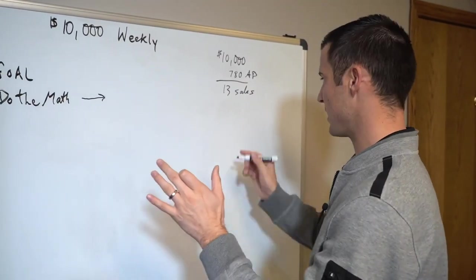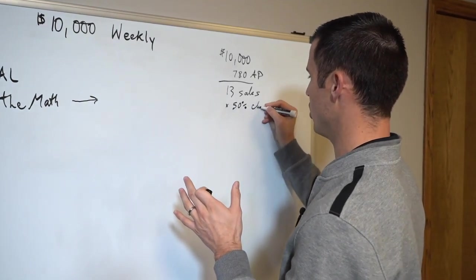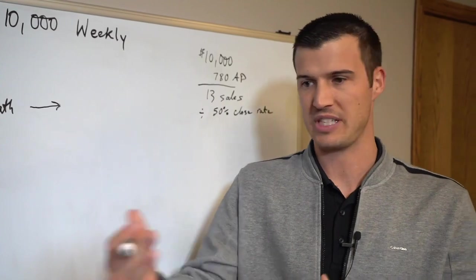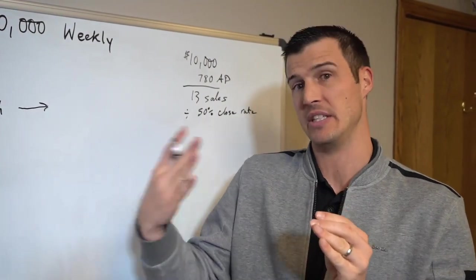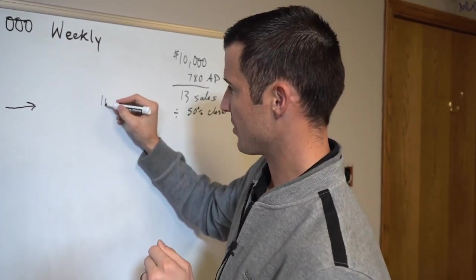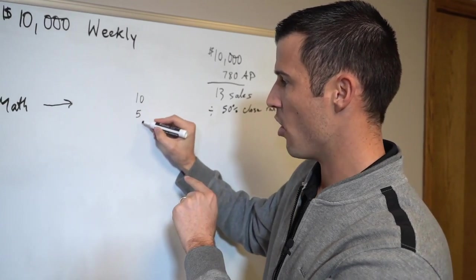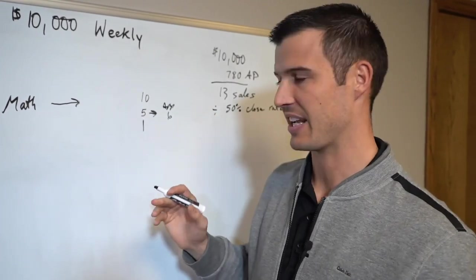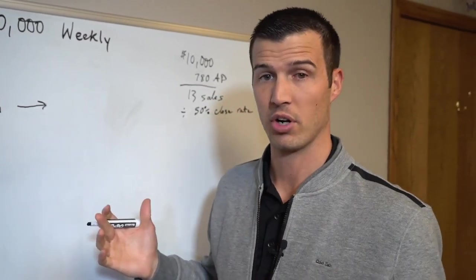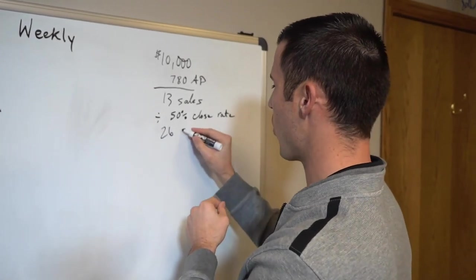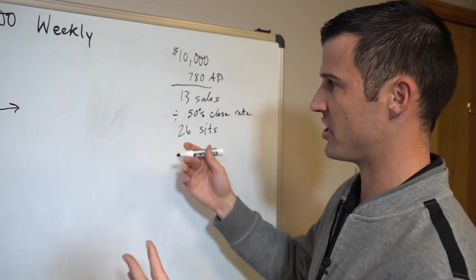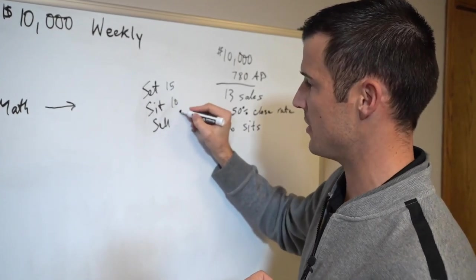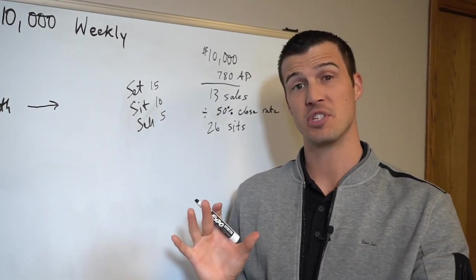Now let's just say typically you're at a 50% close rate, which means if you sit with two people you'll close one, if you sit with 10 you'll close five. We're not accounting for situations where one of the five was actually a couple so it was a double sale, then your app count ends up being six. But let's go back - divide by 50% close rate, then you need 26 sits, which means you need to sit down. I teach a system called Set, Sit, and Sell. I believe every insurance agent needs to set with at least 15, sit with 10, and sell 5. That's my triple S weekly system because 92% of insurance agents fail.